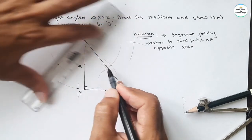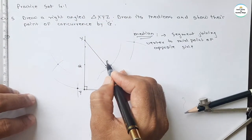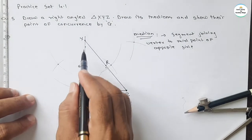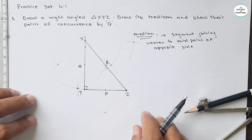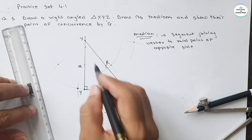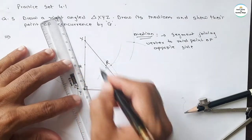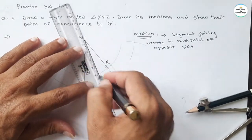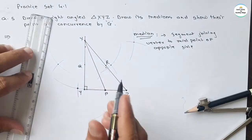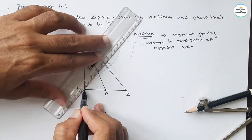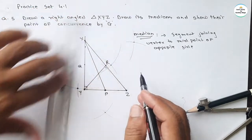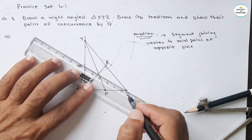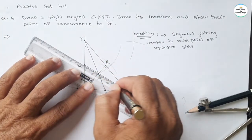If we join the midpoint to the opposite vertex, XP, this segment is called a median. Similarly, draw all three medians: YR and ZQ.